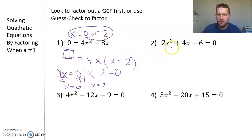Looking at number 2, it looks like we'd use guess-check right away. But it's always best to check for a GCF first, because all three terms on the left side are even. A 2 will go into all these terms. By taking a 2 out, when we factor this, our a value will be 1 on the inside, and we can use easier factoring methods.